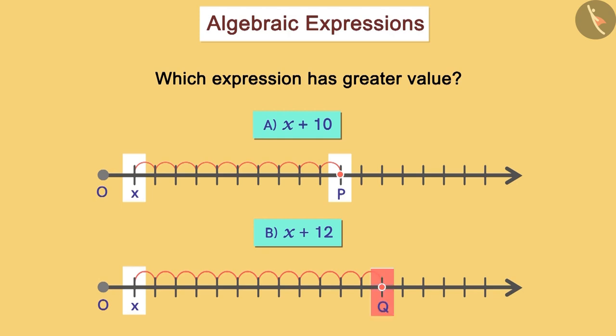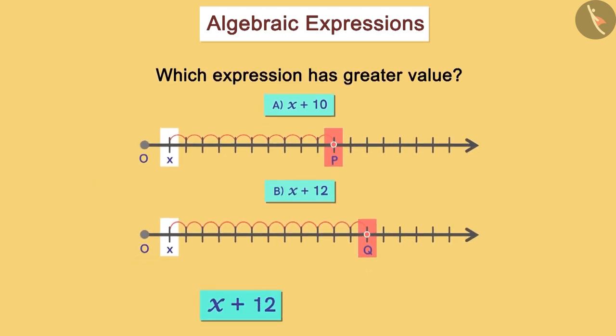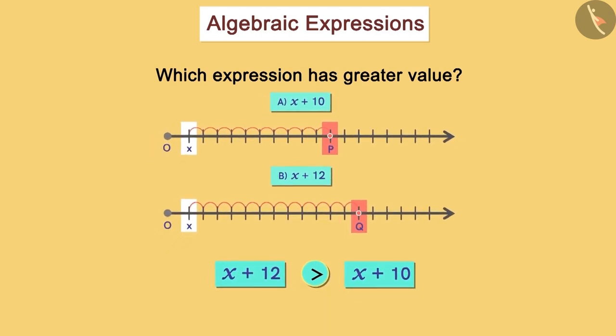Here, we can see very clearly that point Q lies ahead of point P. It means that the sum of x and 12 is greater than the sum of x and 10. This way, we can compare the expressions by representing them on the number line.